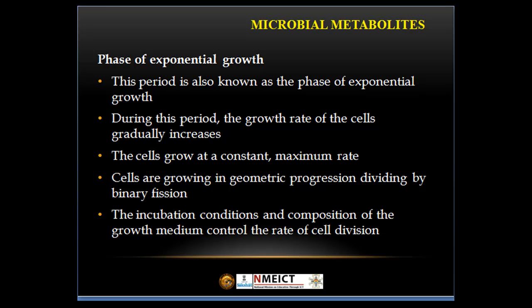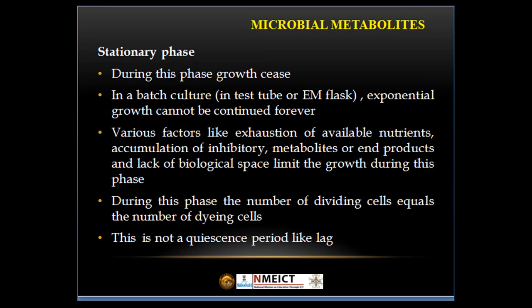Second phase, that is, phase of exponential growth. This period is also known as the phase of exponential growth. During this period, the growth rate of the cell gradually increases. The cells grow at a constant but maximum rate, growing in geometric progression and dividing by binary fission. The incubation condition and composition of the growth medium control the rate of cell division.